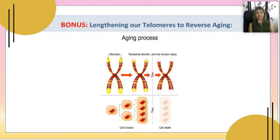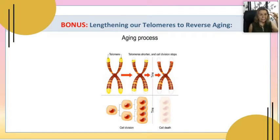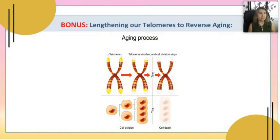Lengthening our telomeres to reverse aging — this is part two, really a bonus, but quite a large part. Now, the telomeres are like — if you look at the slide here, there's a picture of the telomeres at the tips of the chromosomes, the little yellow caps. You can see they are diminishing in size until, at the right-hand side, you see cell disease and then cell death.